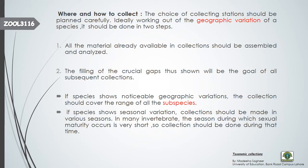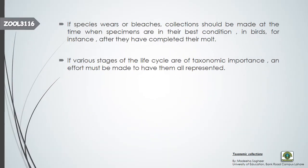If species show seasonal variation, you must focus on the particular season for collection. Collection should be made in various seasons; in many invertebrates, the season during which sexual maturity occurs is very short, so collection should be made in that short time period. Collections should be made when organisms are in their best condition — for example, birds undergo molting and shed their feathers as seasons change.